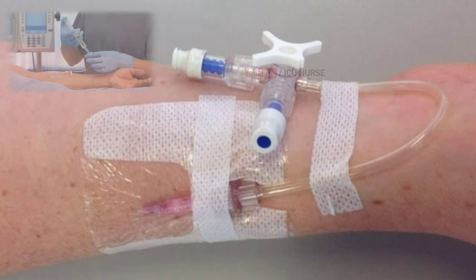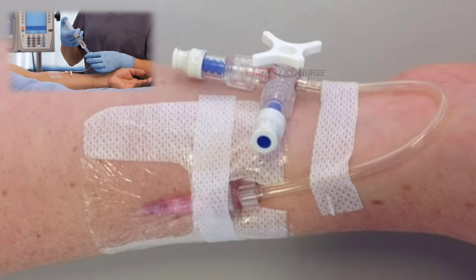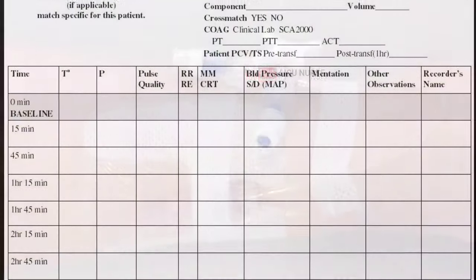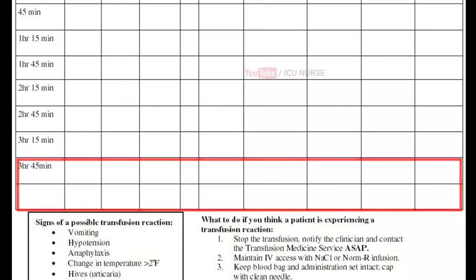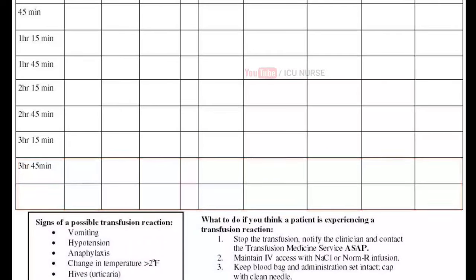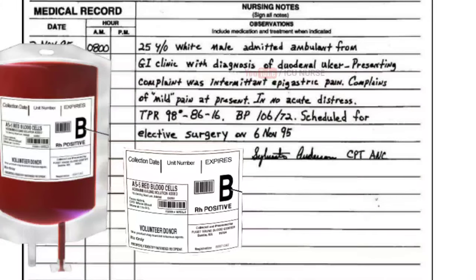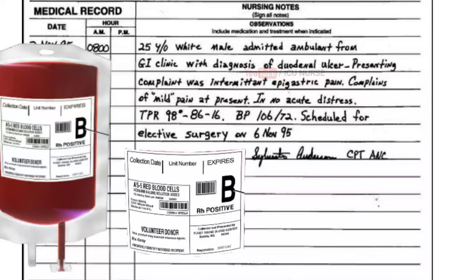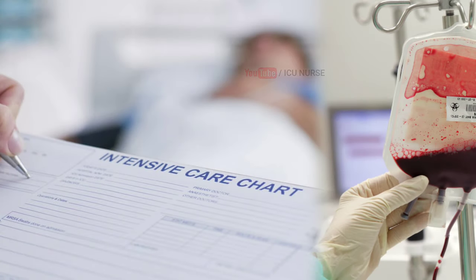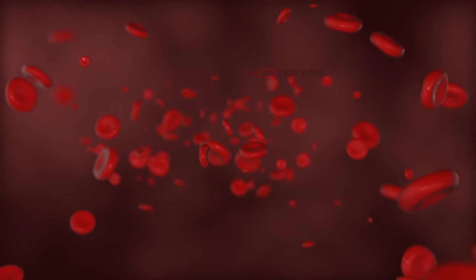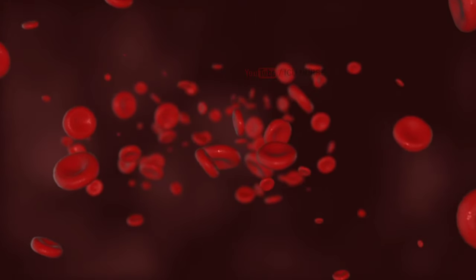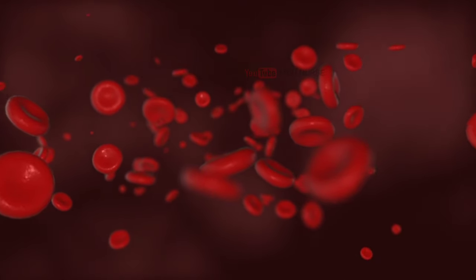After finishing the blood transfusion, slowly flush the 3-way and IV cannula with normal saline to avoid any blockage with the blood. Check the post-transfusion vital signs and document it in the nurse's notes and blood transfusion monitoring sheet, also mentioning the finishing time. Remove the label on the blood bag and stick it in the nurse's notes and document everything about the procedure. During transfusion, while documenting vitals in the ICU chart, do not forget to add the blood being transfused in the intake column every hour, as the blood product should be included in fluid calculation. If the transfusion was done due to anemia, document the hemoglobin level before and after the transfusion in the nurse's notes.